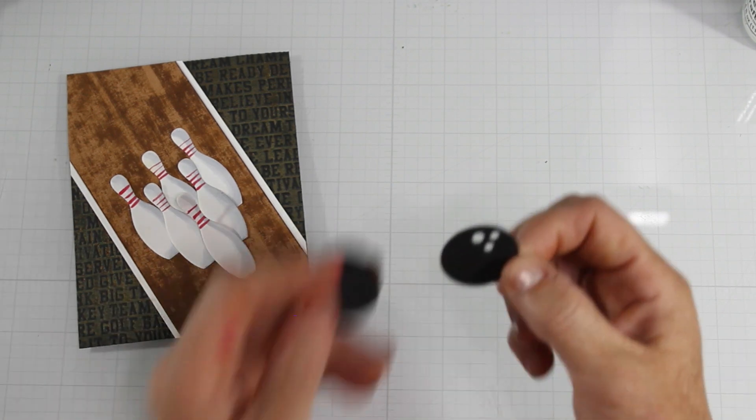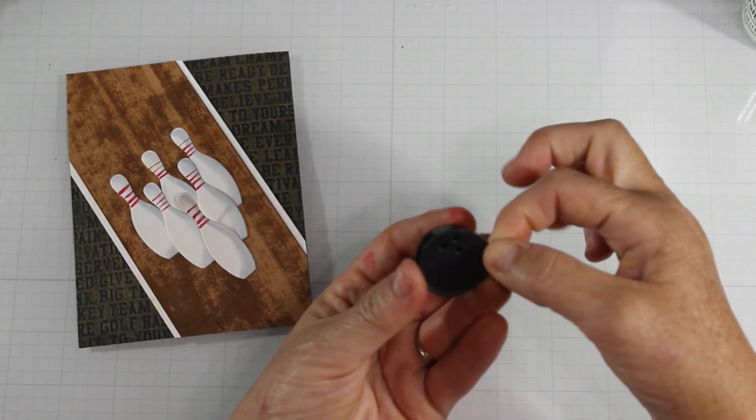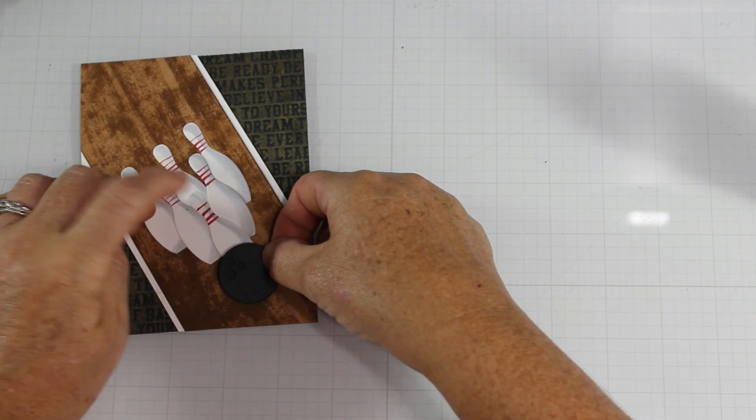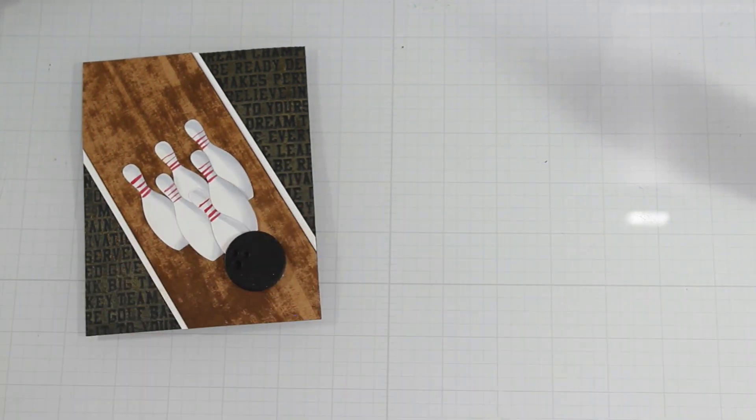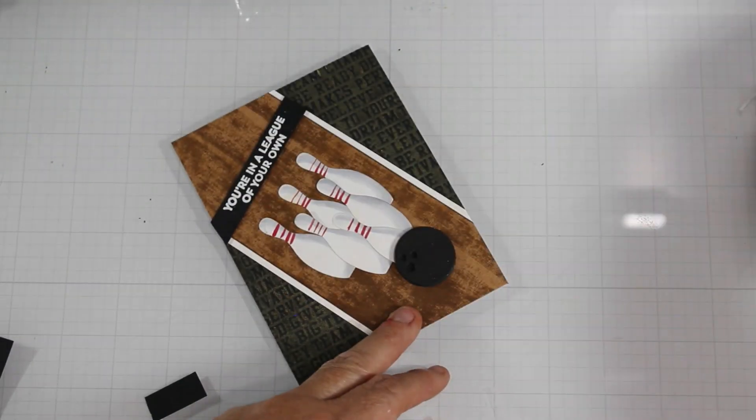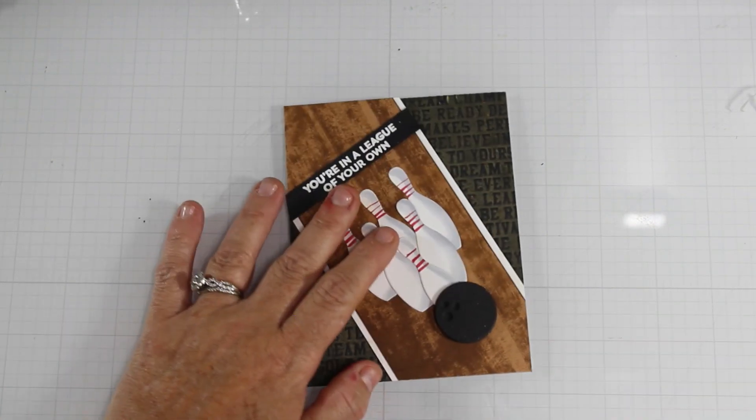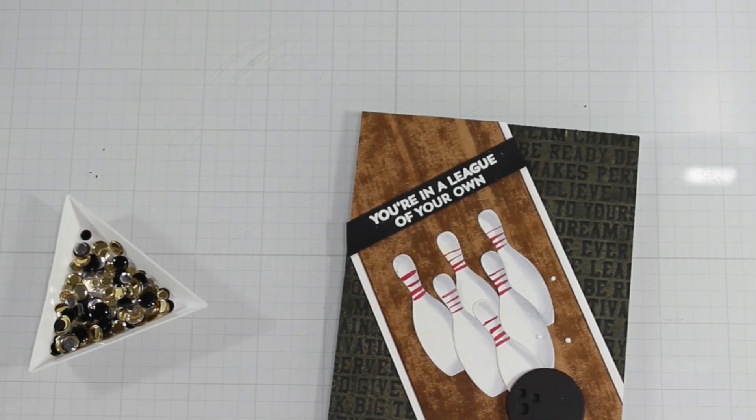I then die cut the bowling pins from the sporting goods set and the bowling ball. And I created just a little configuration. And then I embossed, you're in a league of your own with white embossing powder and I put that across the top.